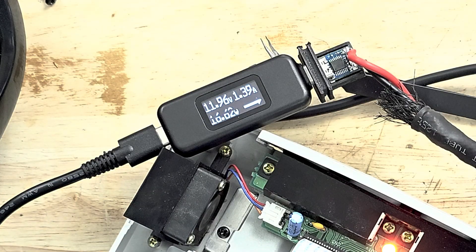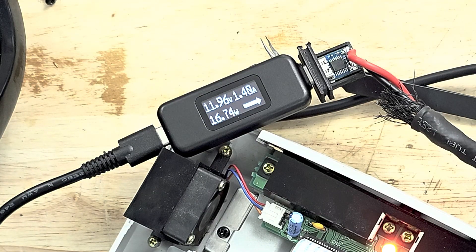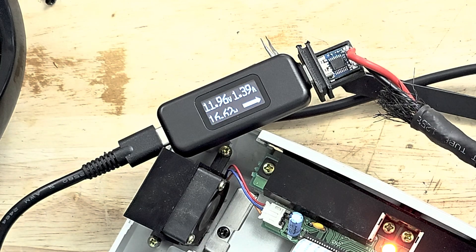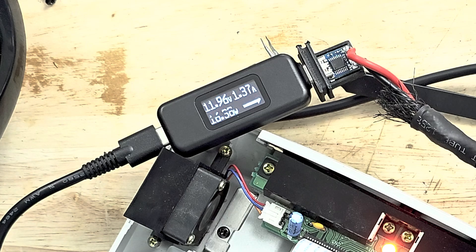Under normal operation this Dreamcast averaged around two watts more than the one with the GD-EMU. The highest reading I could obtain was 18 watts, and that was because the power cable stopped the CD from spinning.